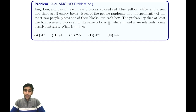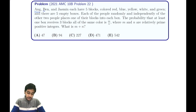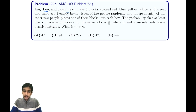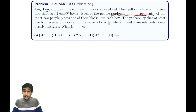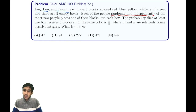In this video we're going to take a look at the 2021 AMC 10B Problem 22. Ang, Ben, and Jasmine each have five blocks colored red, blue, yellow, white, and green, and there are five empty boxes. Each of the people randomly and independently places their blocks — independently meaning Ang is not dependent on Ben or Jasmine, just random and irrelevant of the other people — putting one block in each box.